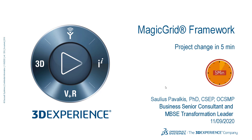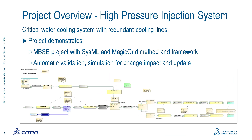Hello. In this demonstration, it will show how to change a project in minimum time. Once the project is done, we don't need to spend a lot of time updating it. So if you get new requirements for your existing project, even if the project is very complicated, based on capabilities like validation, simulation, and other traceability, you can implement the change, track the impact, and check your model in minimum time. Here we see the demonstration project, which is a high-pressure injection system.